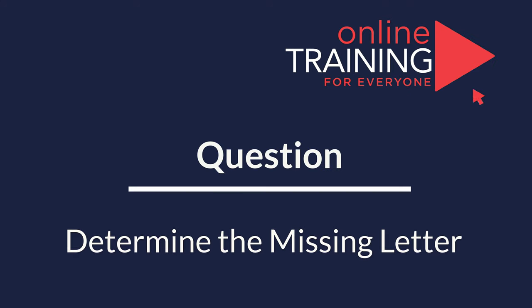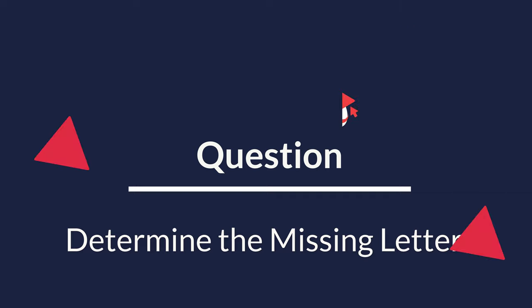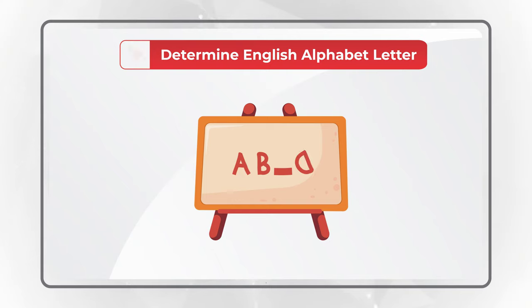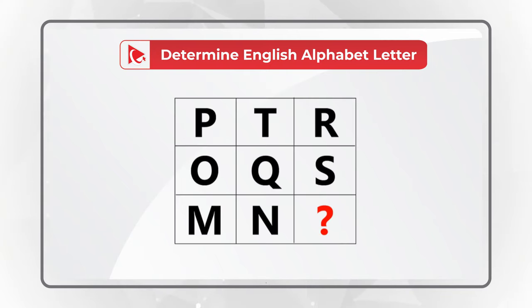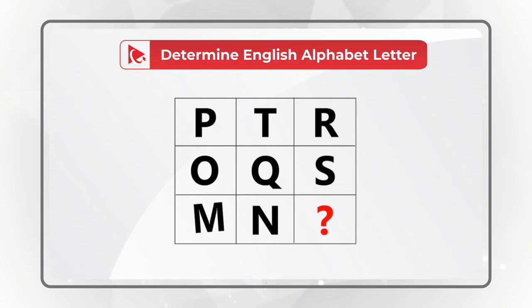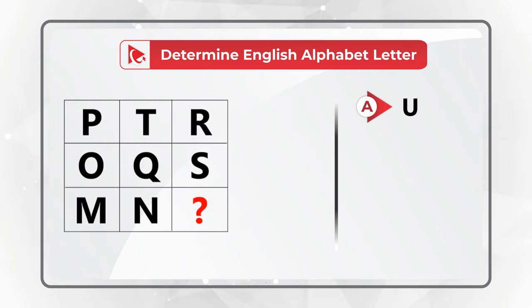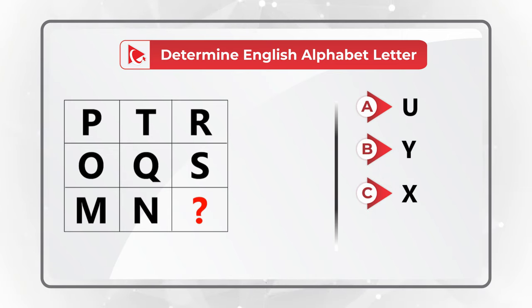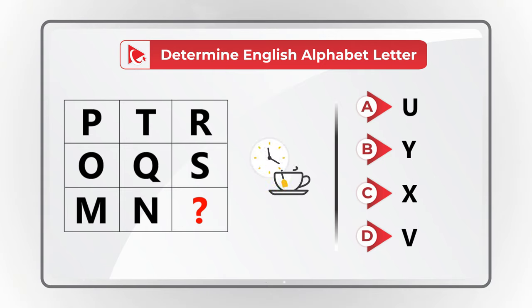Here's one of my favorite questions to test your verbal reasoning as well as your knowledge of the English alphabet. You need to determine the missing letter to replace the question mark, selecting from four choices: A) U, B) Y, C) X, or D) V. Give yourself a little time to see if you can come up with the solution.